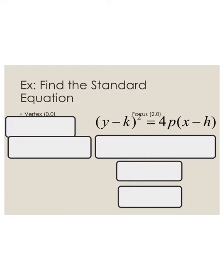For this example, we want to find the standard form of the parabola given a vertex at (0, 0) and a focus at (2, 0). Since the vertex is (0, 0), h = 0 and k = 0. To find p, we use the fact that p represents the distance the focus is from the vertex. So p = 2 − h = 2 − 0 = 2. My p value is 2.